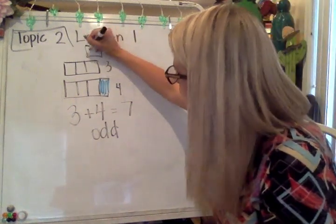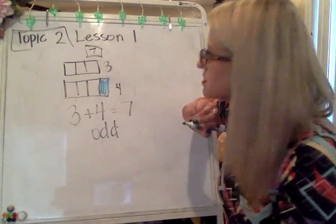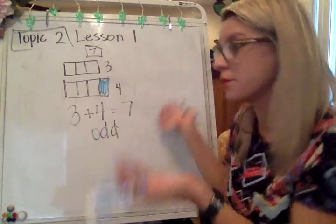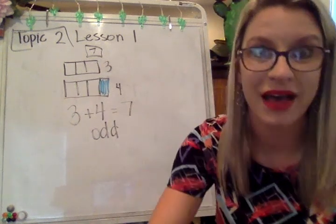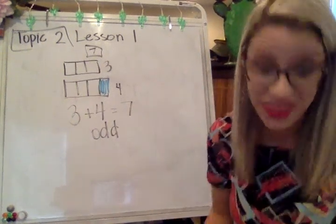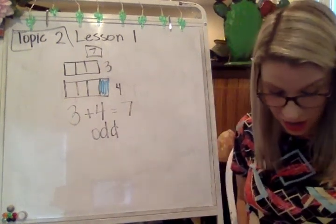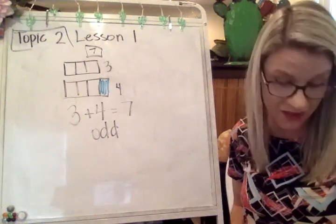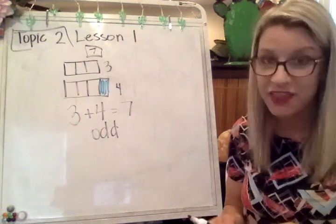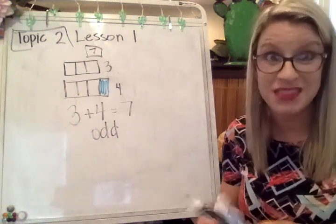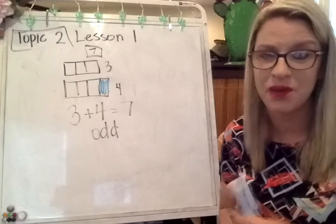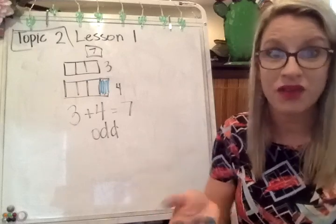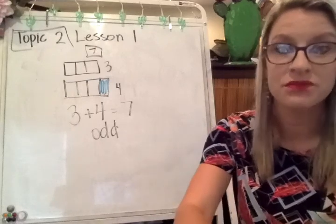At the top I would have the number seven — this is a model of the number seven. You've got this — it's not that hard. If you get confused, think about if you can skip count by twos to get to that number, and that'll really help you as well.